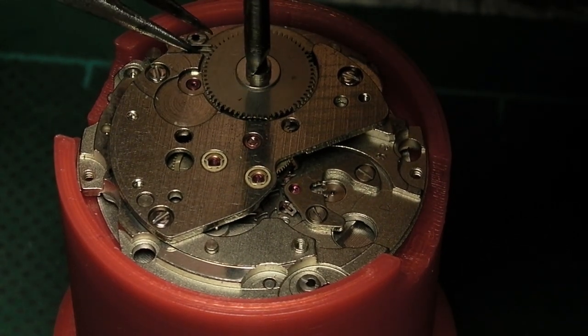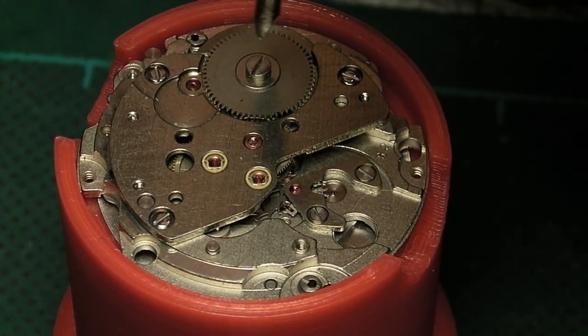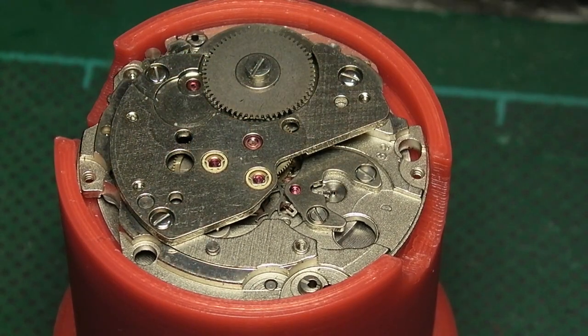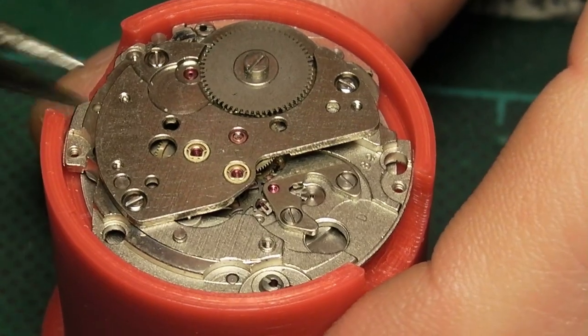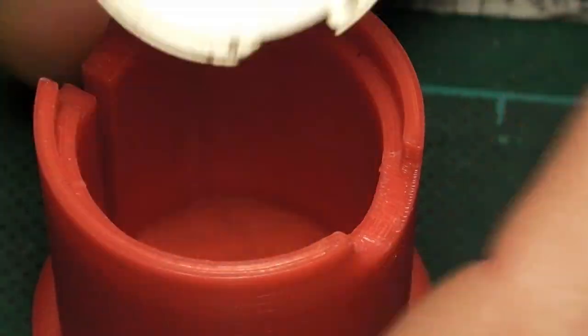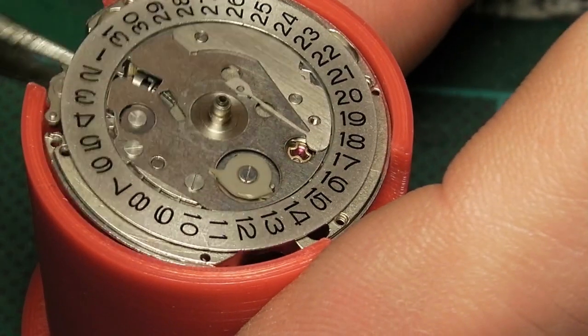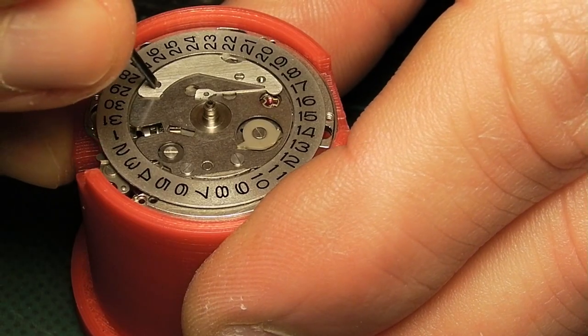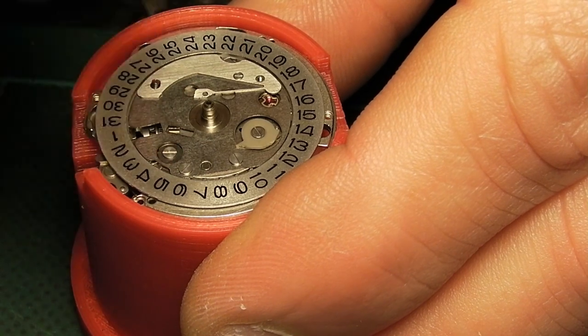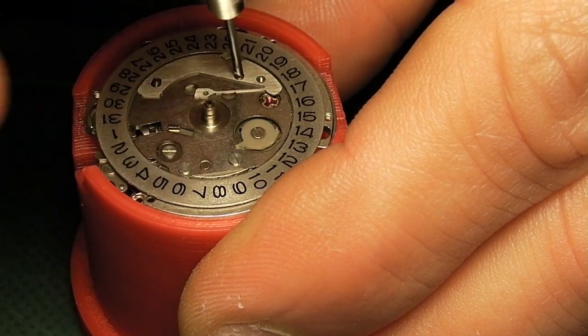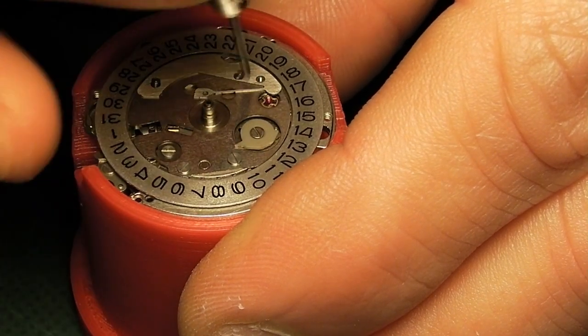On these watches, as with the Seiko movements that are not manual wind, this has to be done with a screwdriver on the barrel arbor screw because it doesn't have a manual winding facility. Here I'm removing the day wheel jumper spring which is held in by two small screws.